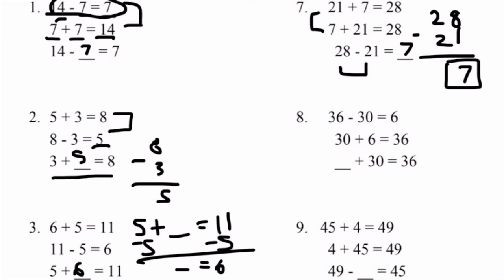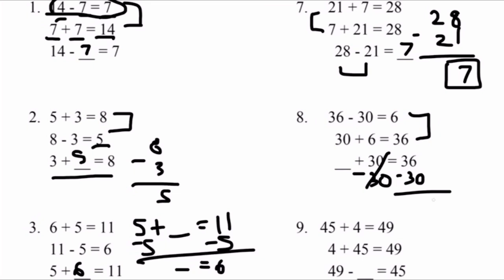Number 8: 36 minus 30 equals 6. 30 plus 6 equals 36. Blank plus 30 equals 36. From the information above, 30 plus 6 equals 36 and 36 minus 30 equals 6. In order to find our blank, we can either subtract 30 from both sides or use the two equations above. Let's subtract 30 from both sides: 36 minus 30 equals 6, and 3 minus 3 is 0. Our final answer is 6. 6 plus 30 equals 36.